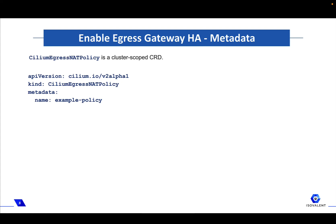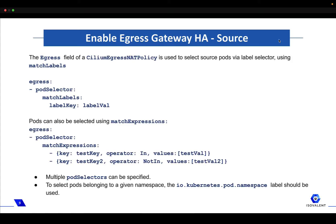We will now look at how the Cilium Egress Net Policy CRD is created. The Cilium Egress Net Policy is a cluster-scoped CRD. First, we need to select the source to which the policy is being applied. The egress field is used to select source pods via label selectors using match labels. So you can match a specific label applied to a specific pod. Pods can also be selected using match expressions. Multiple pod selectors can be specified and you can also select pods belonging to a given namespace using the via.kubernetes.pod.namespace label.